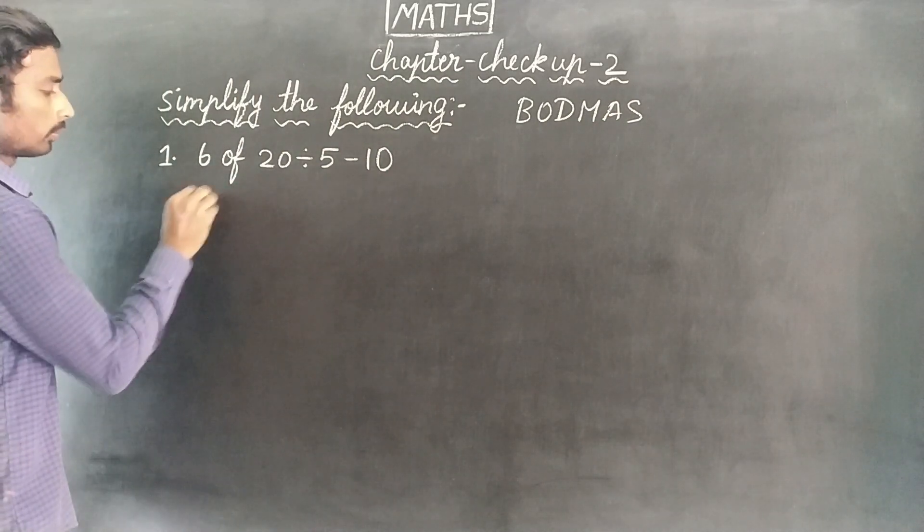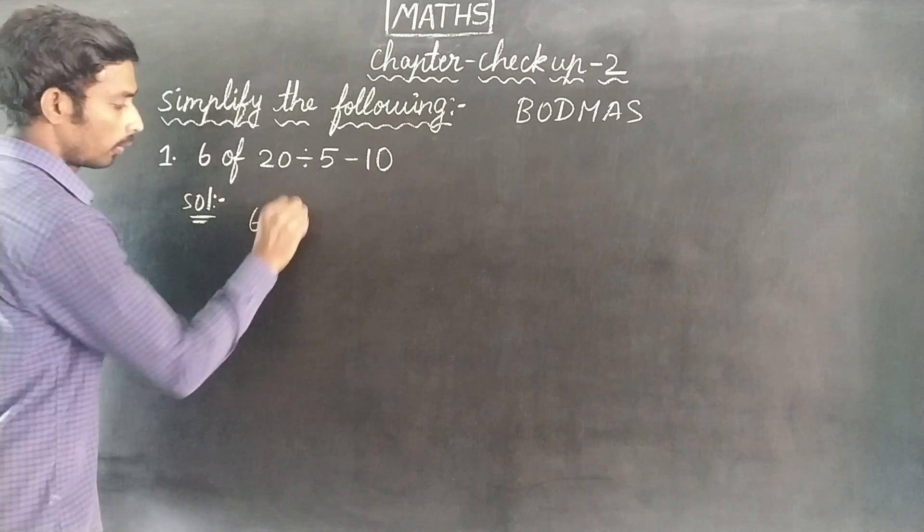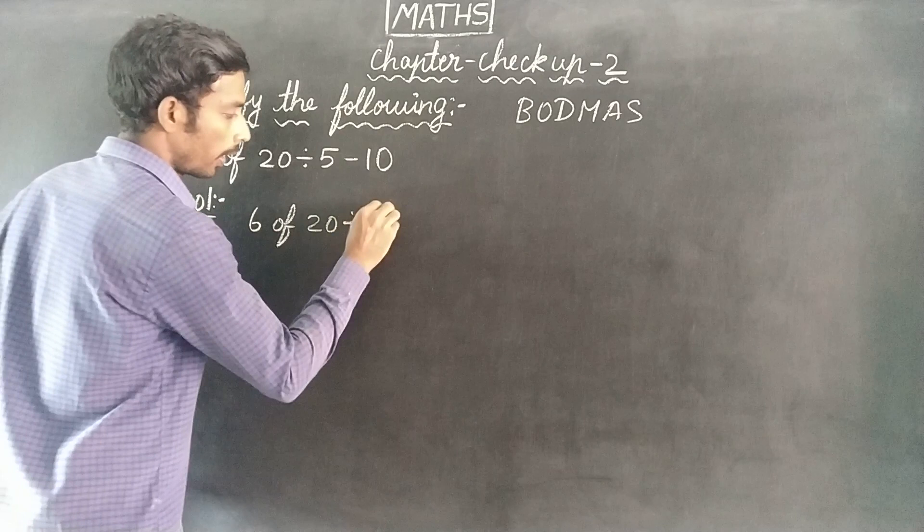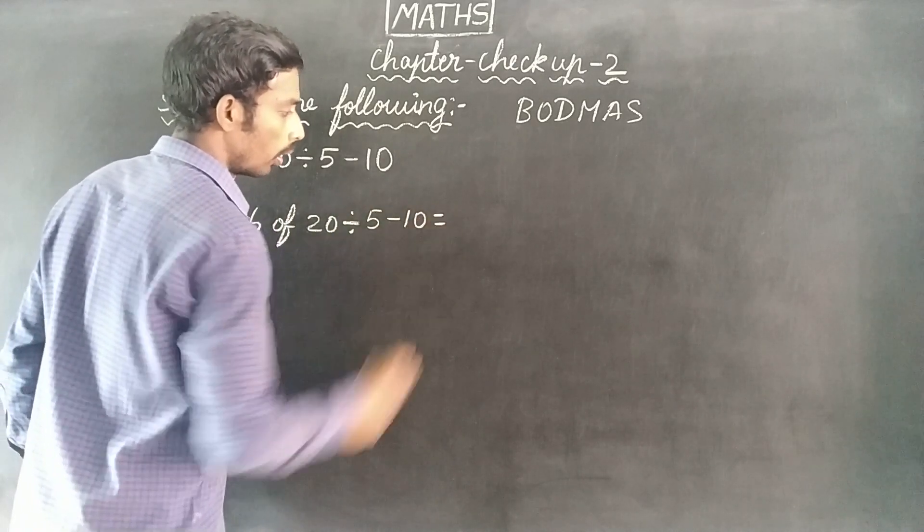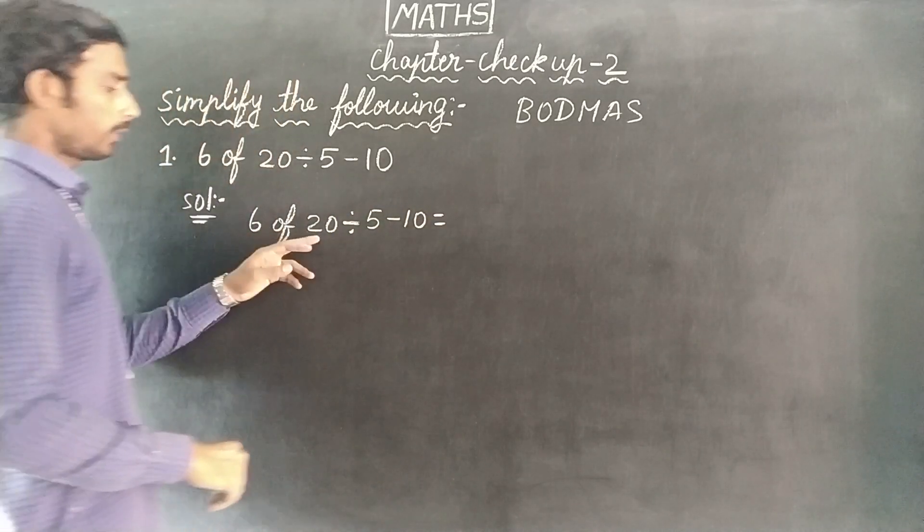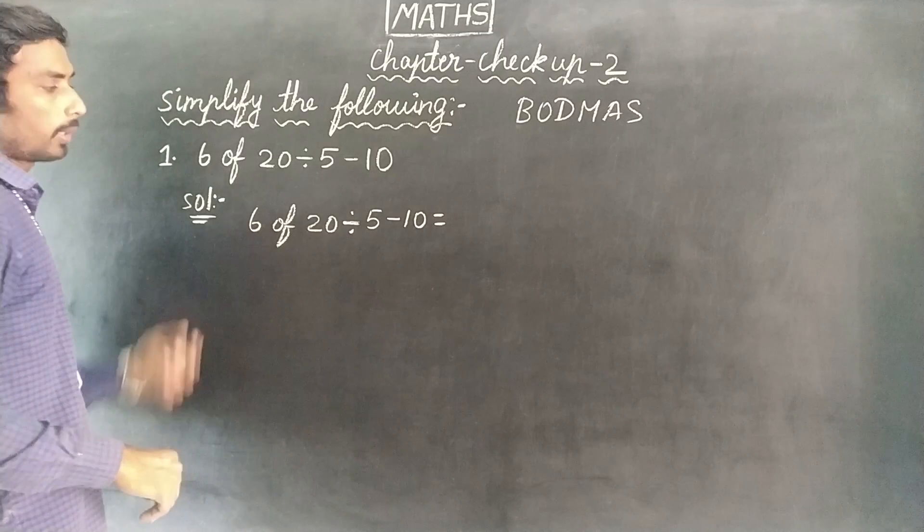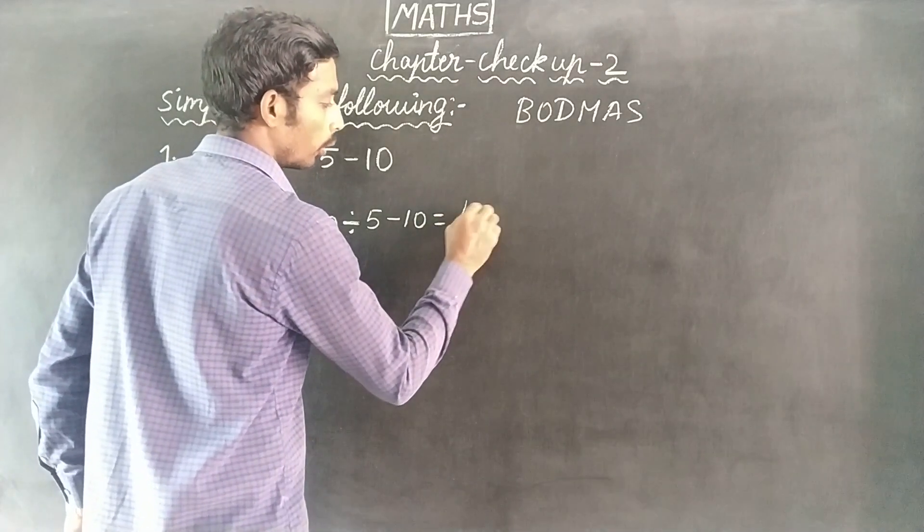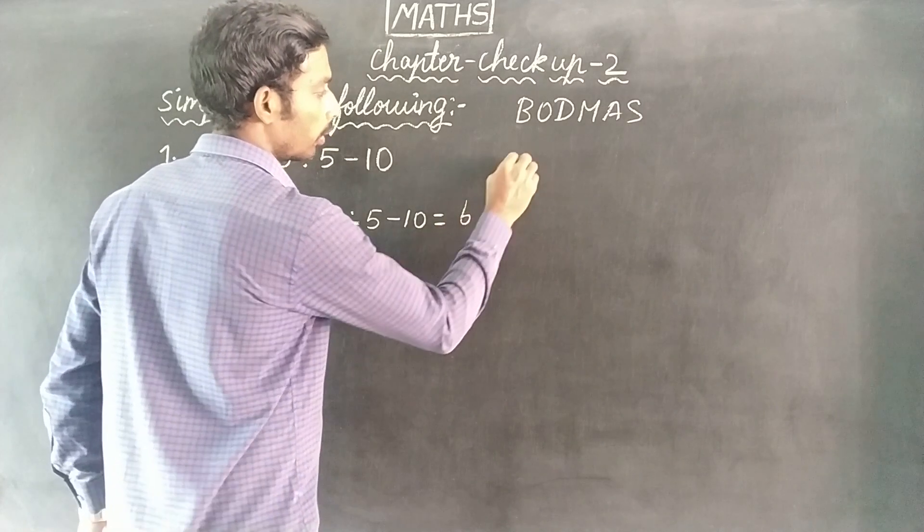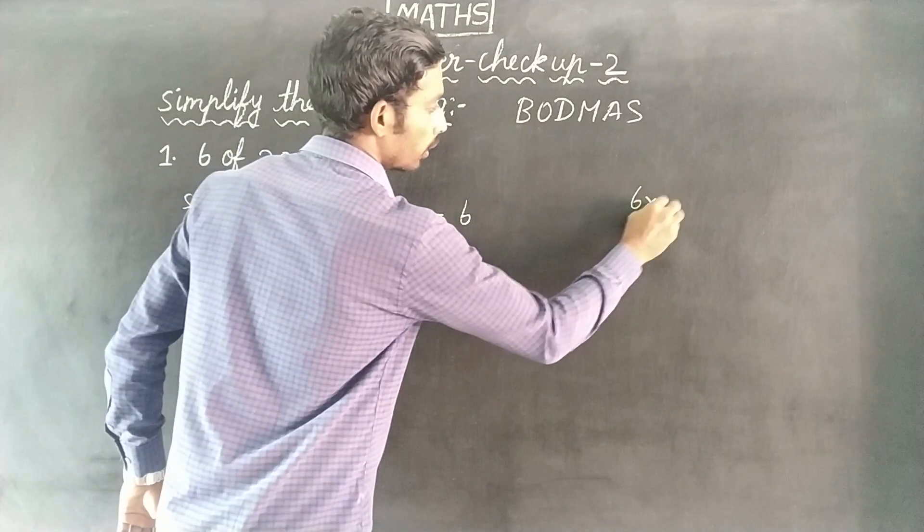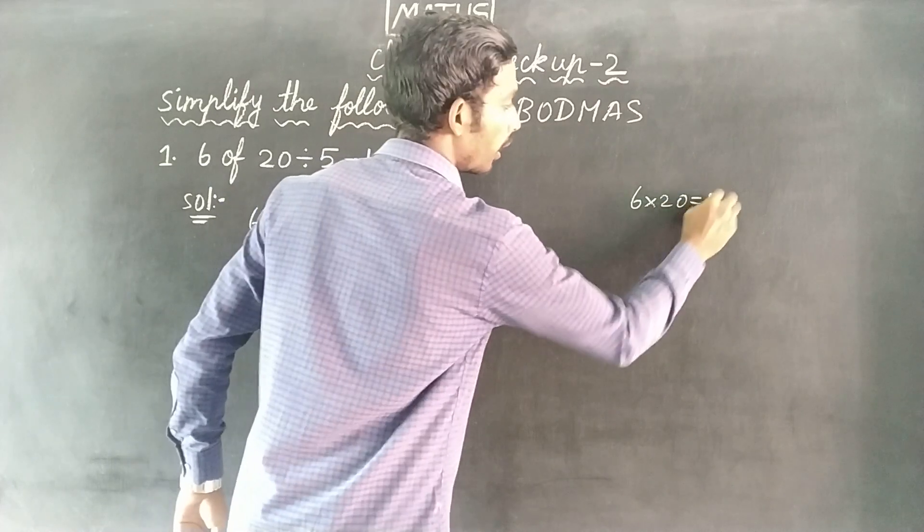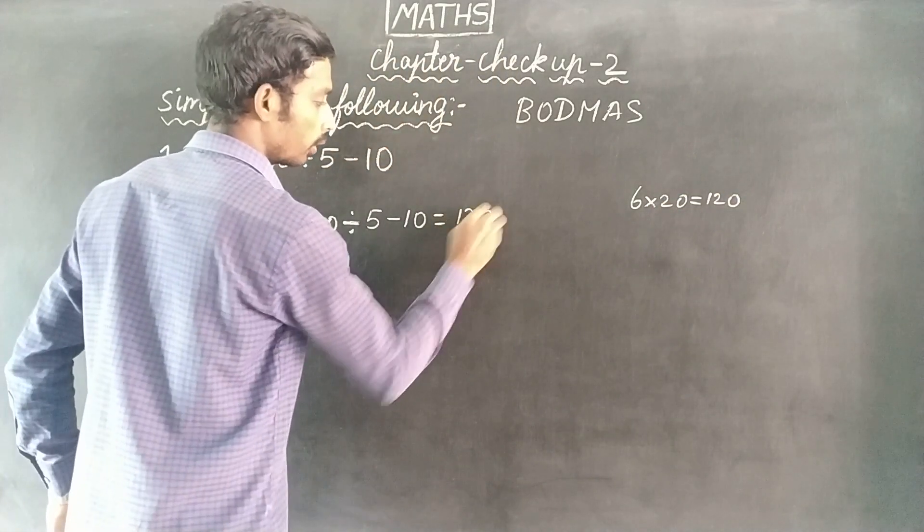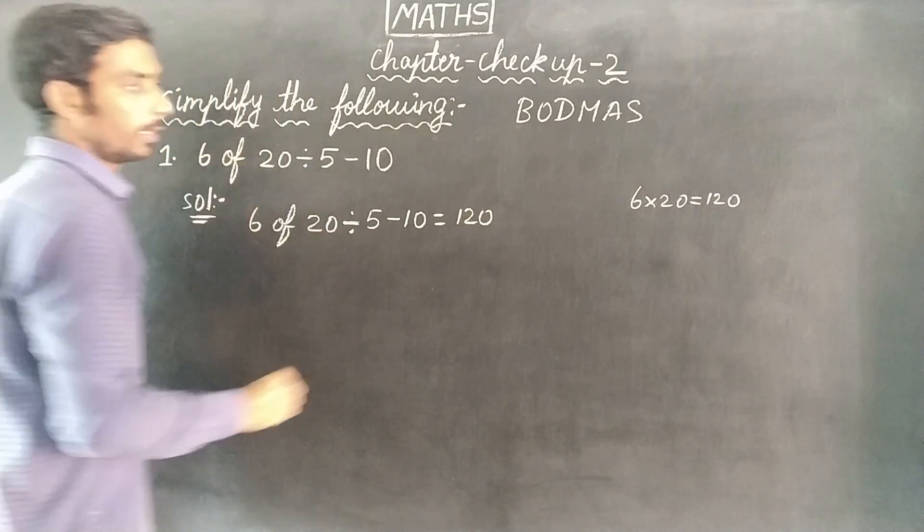Solution: 6 of 20 divisible 5 minus 10 equals... So 6 of 20 we will multiply. 6 of 20 equals 6 into 20 equals 120. So we will multiply. Next,